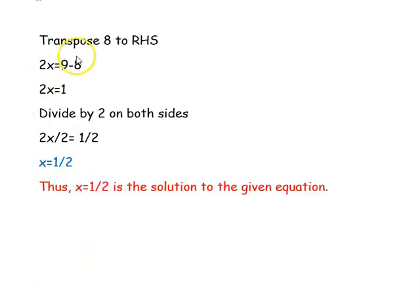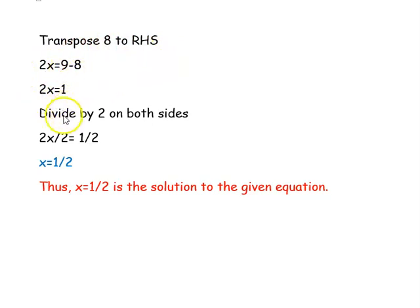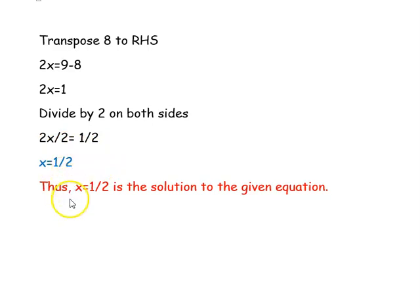Transposing 8 to the right-hand side: 2x = 9 − 8 = 1. Dividing both sides by 2: x = 1/2. Thus, x = 1/2 is the solution to the given equation.